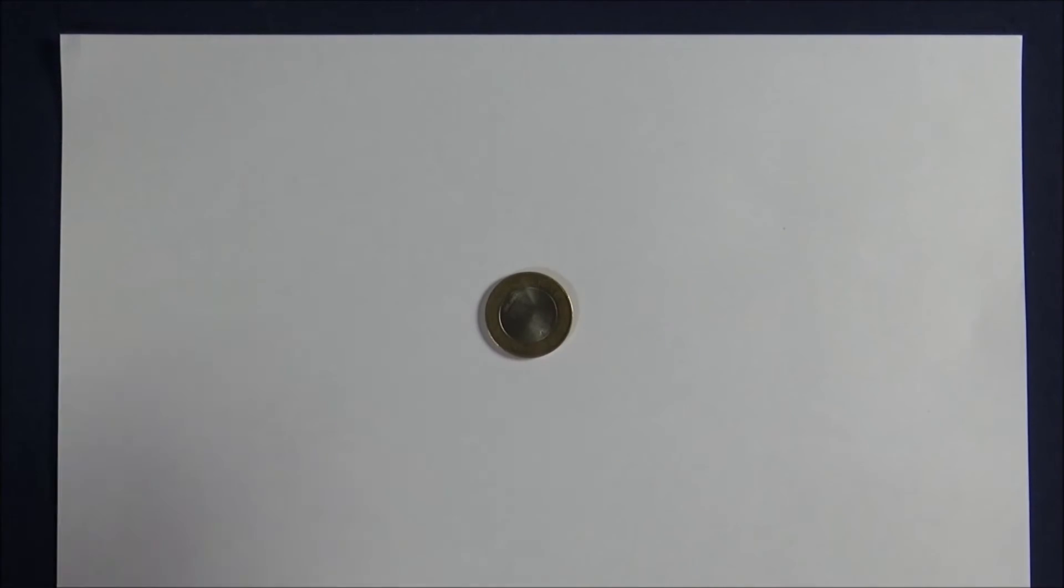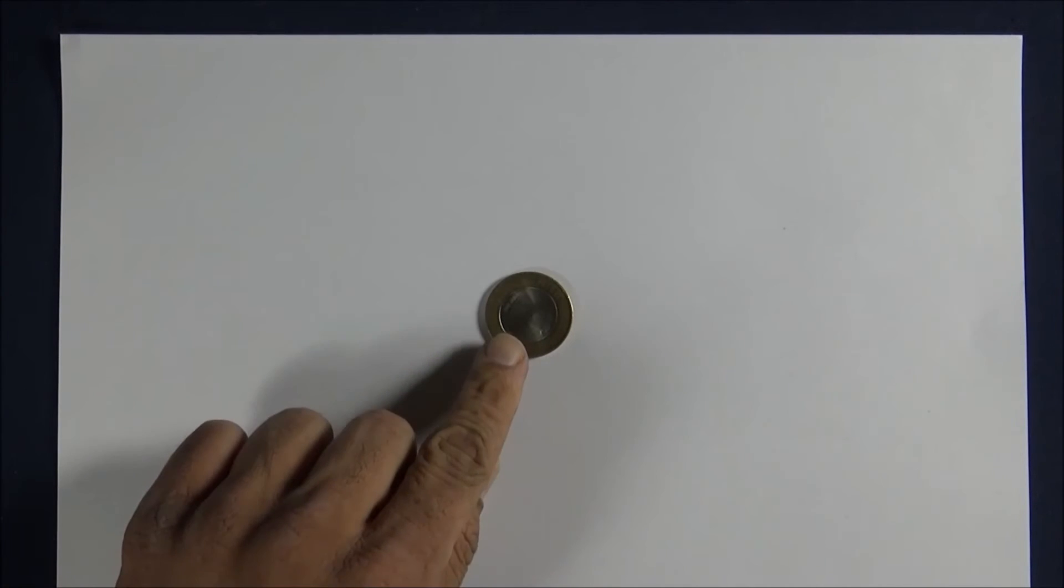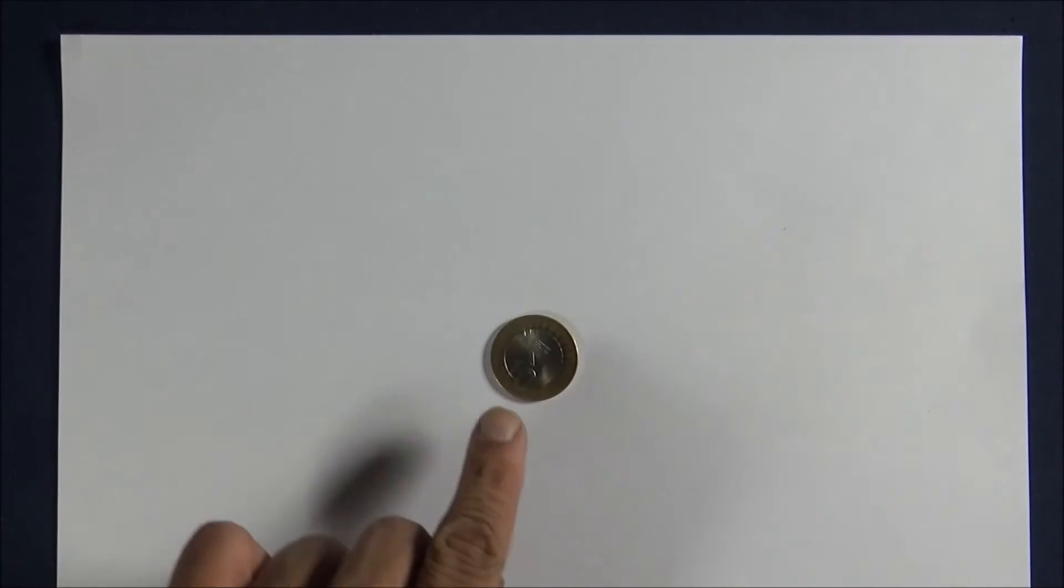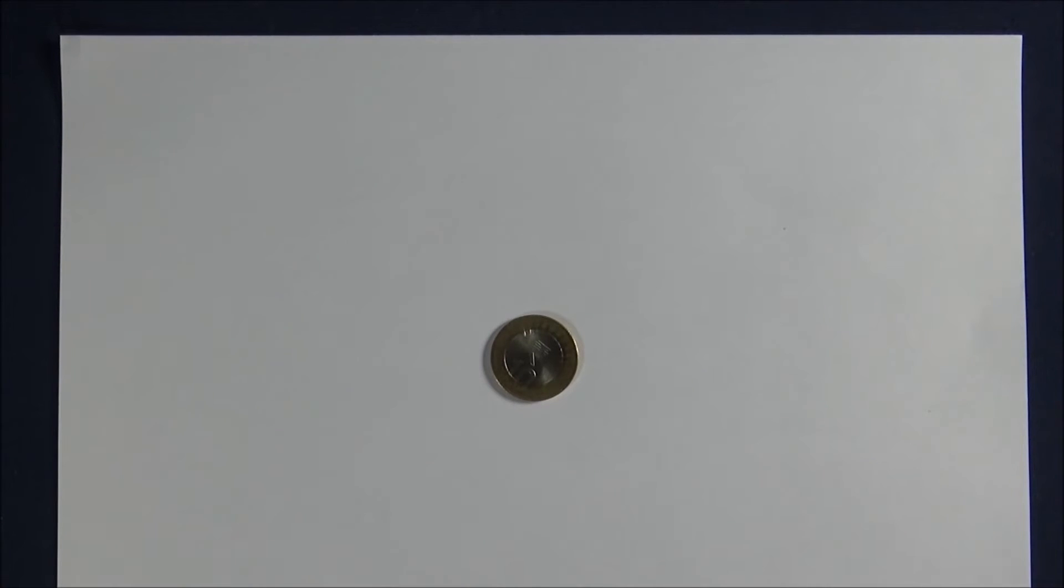And I'm taking another coin. This is a 10 rupee Indian coin. This side is heads and the other side which has the denomination is called tails. So a coin has two sides: heads and tails.